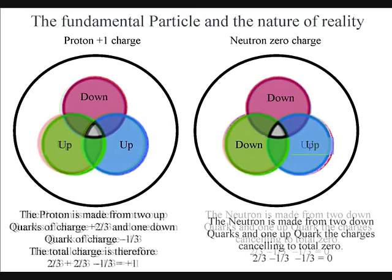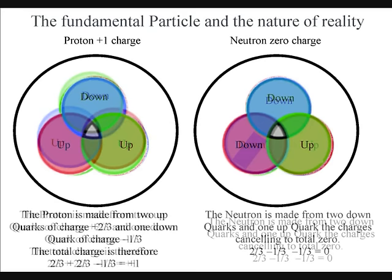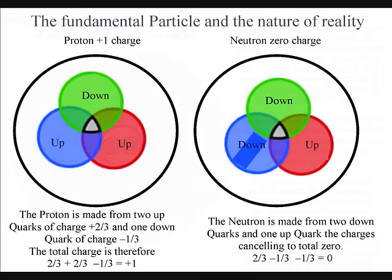The total charge for the three particles is positive one for a proton and zero for a neutron. Therefore, we can think of a stable atom as a positively charged nucleus surrounded by a probability cloud of negatively charged electrons.